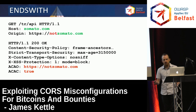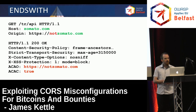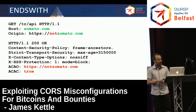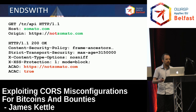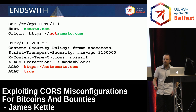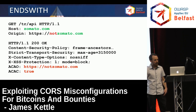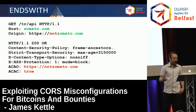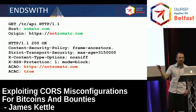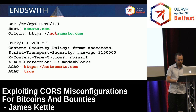Something else that some sites do is they validate the end of the origin and forget to put a dot at the start. So here, I think they're trying to trust all their subdomains. This is Zemanto — this is a real site with a bug bounty program — and they trust notzemanto.com.